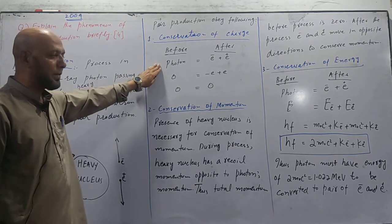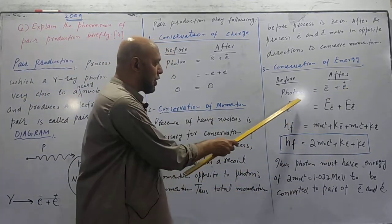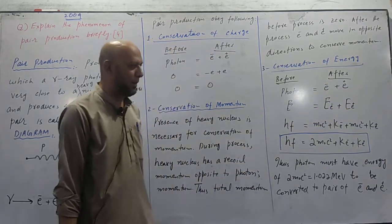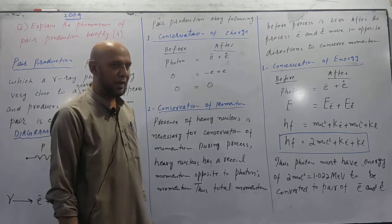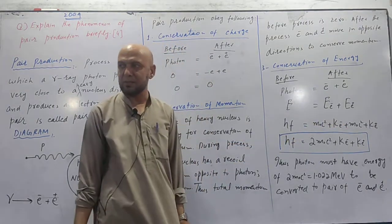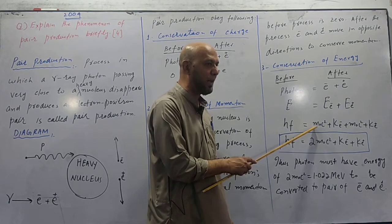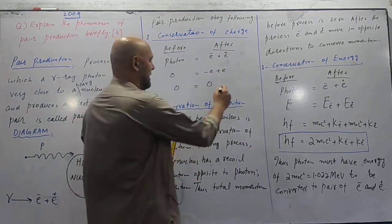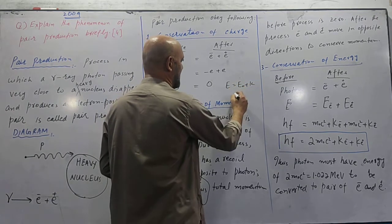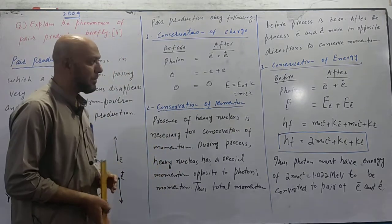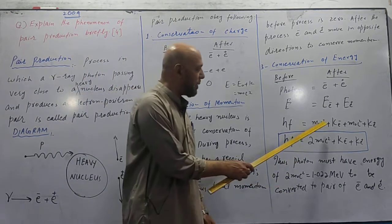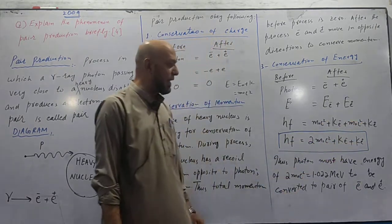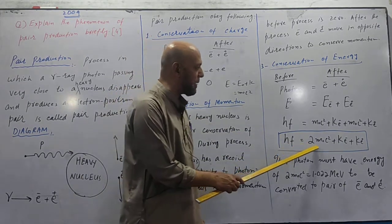Conservation of energy. Again, before process: photon. After process: electron and positron. Photon's energy we write as E. Electron's total energy E of electron, positron's total energy E of positron. Remember Einstein's theory of relativity - Einstein said total energy equals rest mass energy plus kinetic energy. If we take positron and electron's mass as m nought, then positron's rest mass energy is also e nought, and electron's rest mass energy is also e nought. E equals e nought plus K plus e nought. E nought equals m nought c square. Photon's energy is hf. So hf equals 2 m nought c square plus kinetic energy of electron and kinetic energy of positron. This is our conservation of energy equation.